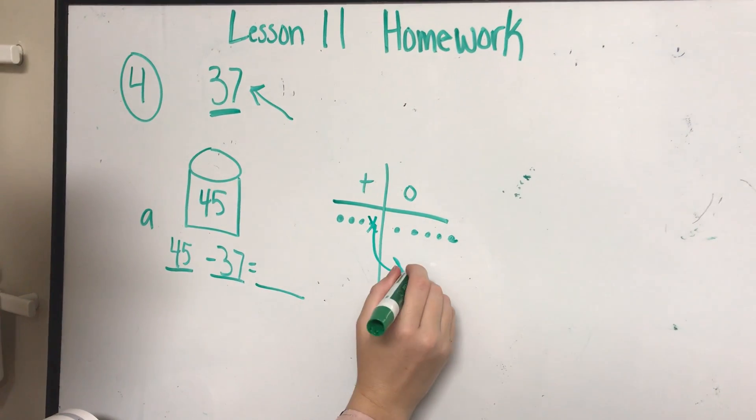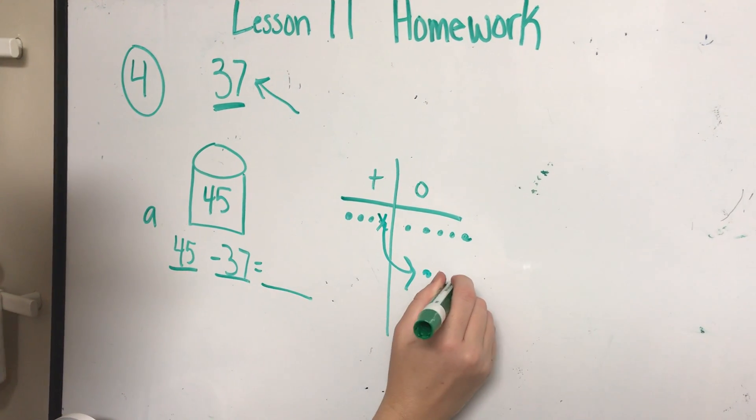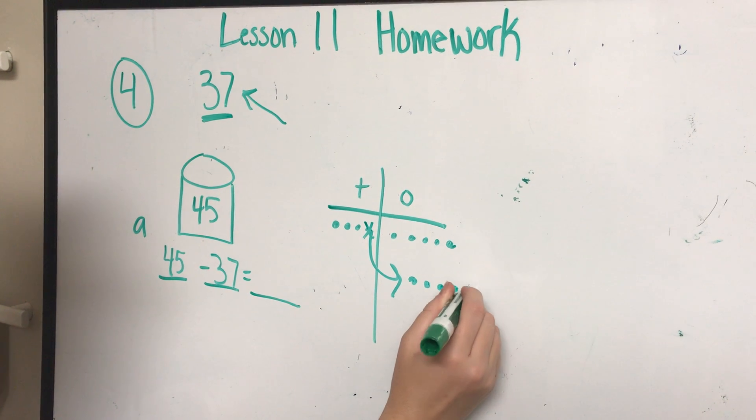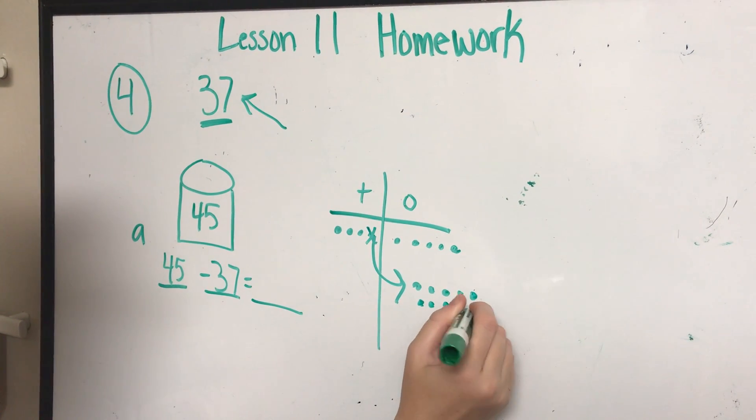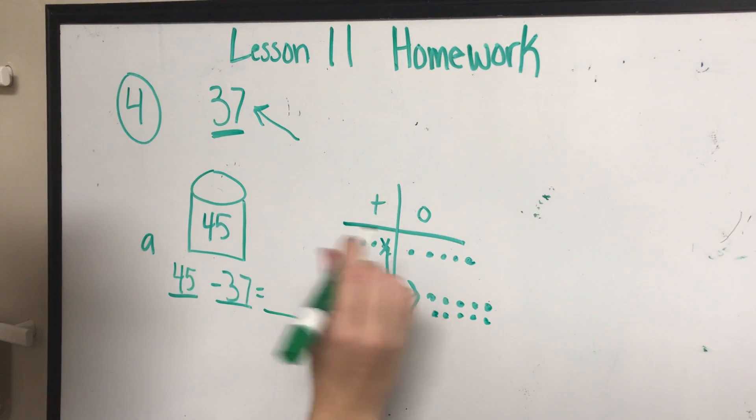One, two, three, four, five, six, seven, eight, nine, ten. Now, can I subtract seven ones? Yes. One, two, three, four, five, six, seven.